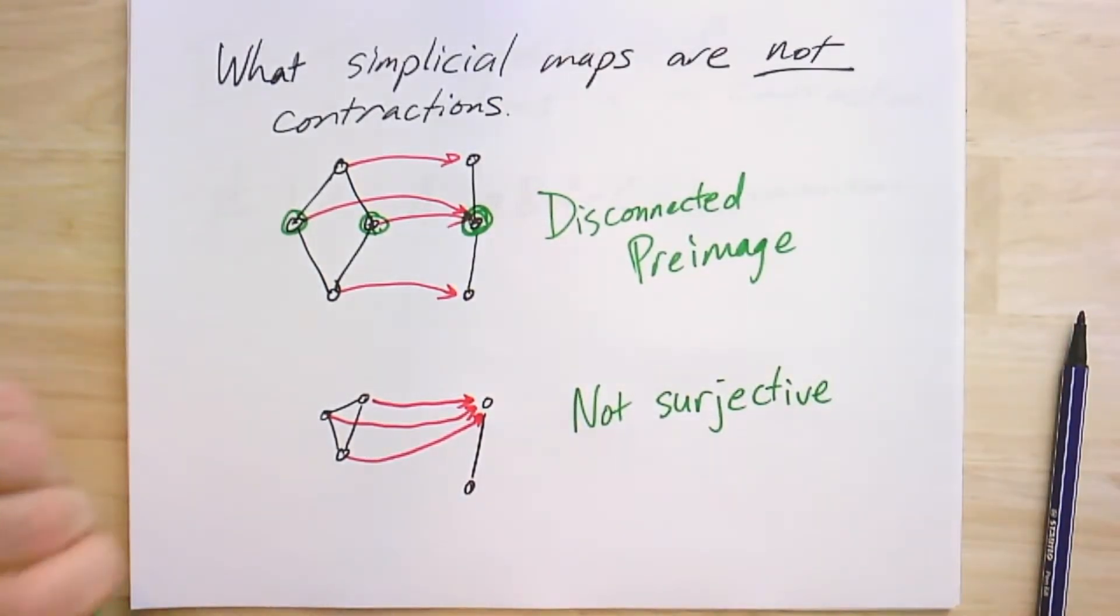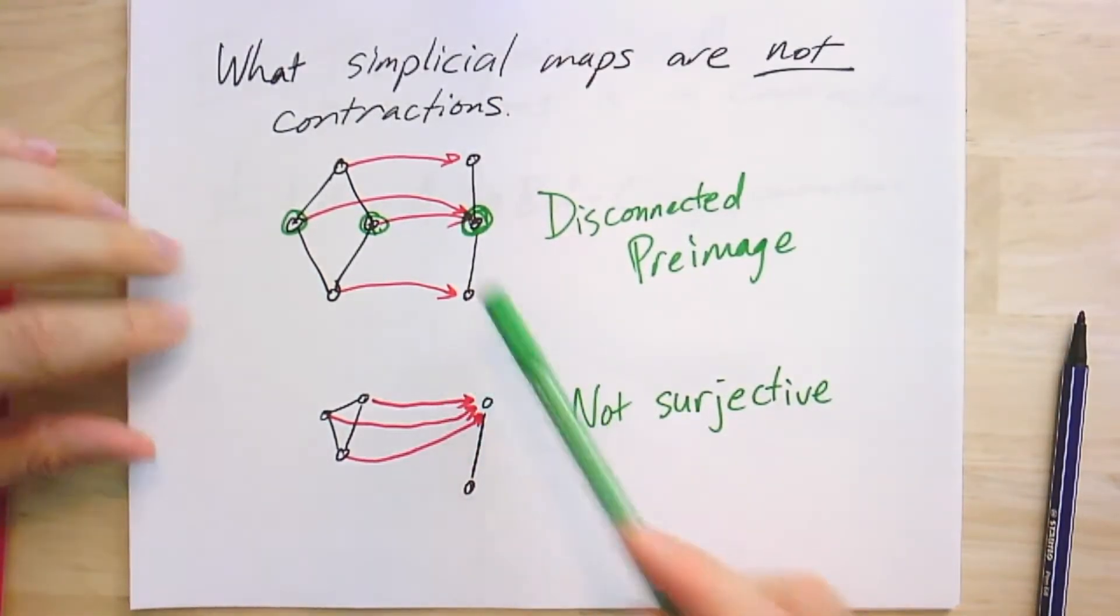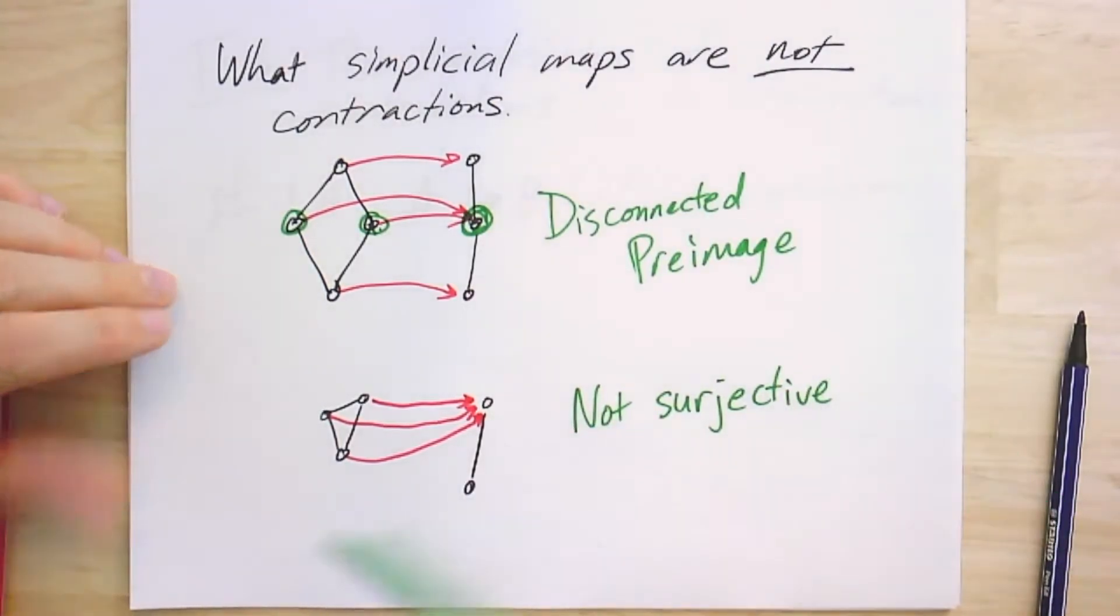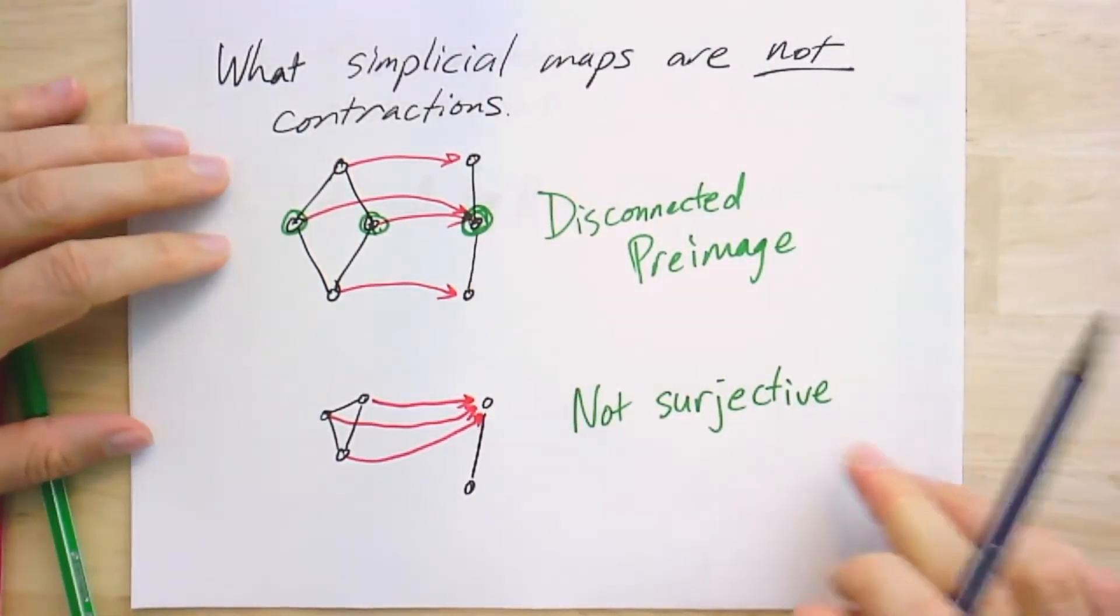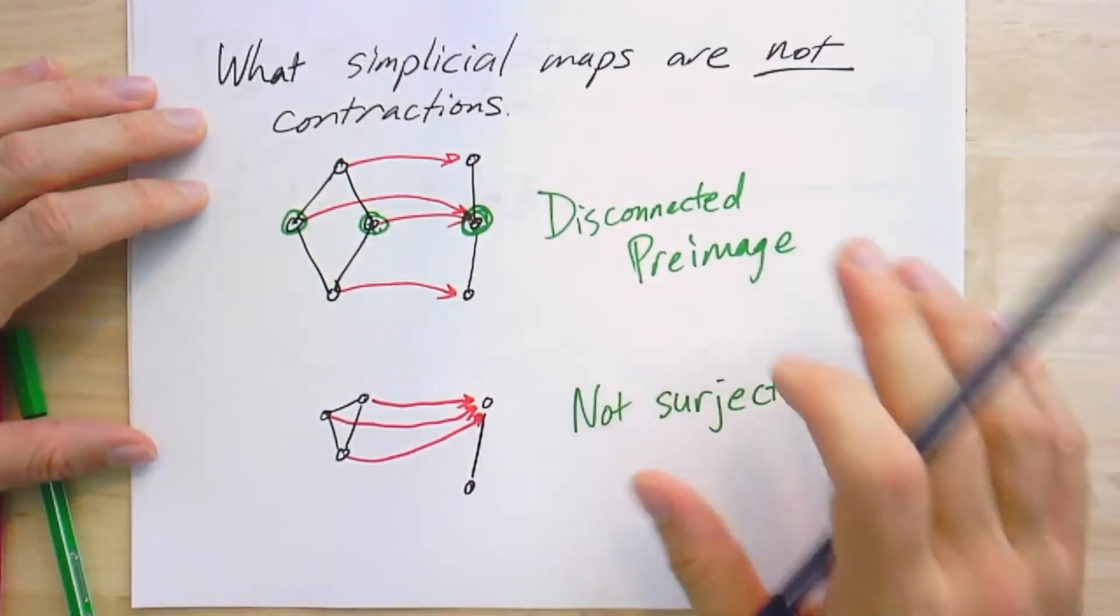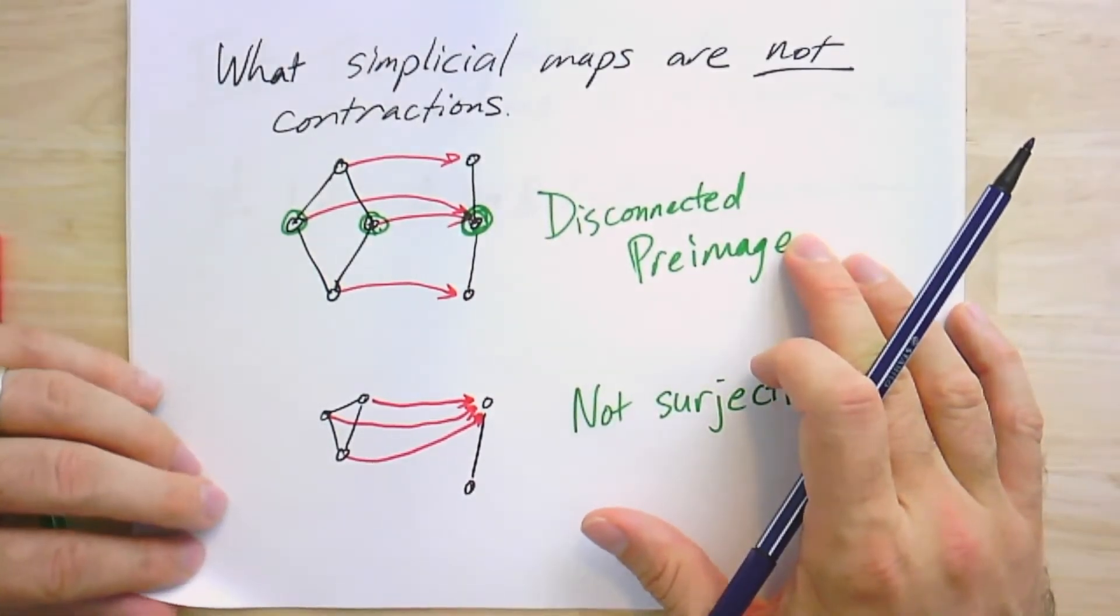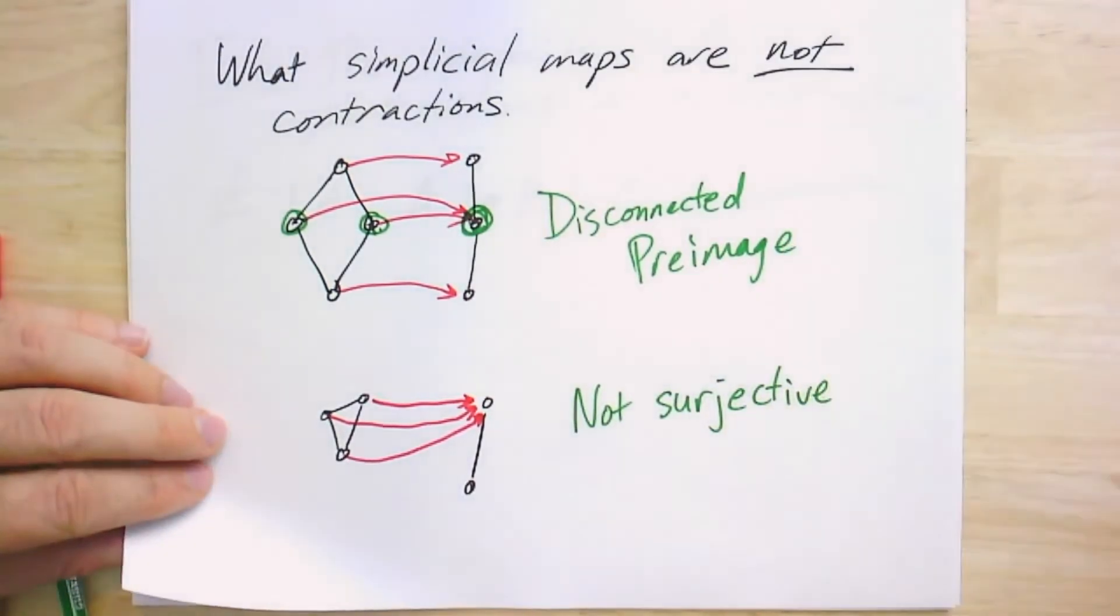So these are two examples of simplicial maps that are not contractions because they don't satisfy the two conditions we need, namely being surjective or having preimages of connected subgraphs being connected.